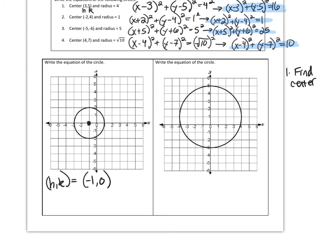So now I know h and k. Next, I figure out the radius. And in this case, r is 2. The distance from the center to the circle is 2. Now I can write the equation.